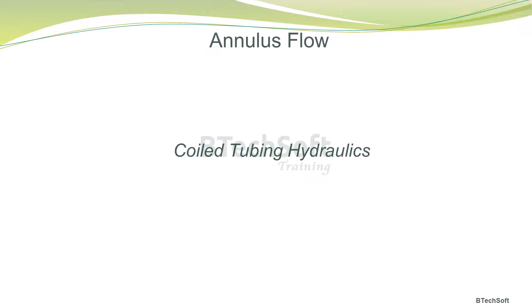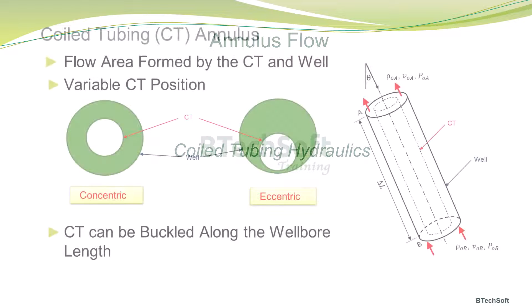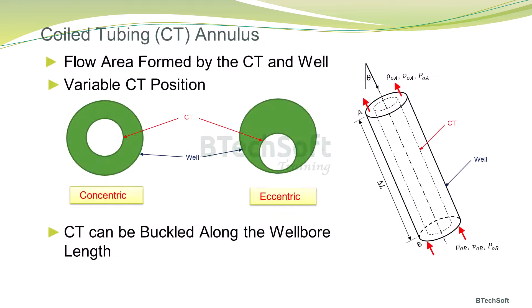In this tech bit, we discuss flow in the annulus formed between the coil tubing and the well, and related modeling options to determine the annular pressure loss. Specifically, we focus on the flow area found between the coil tubing and the well bore as depicted in this diagram showing a well annulus segment.